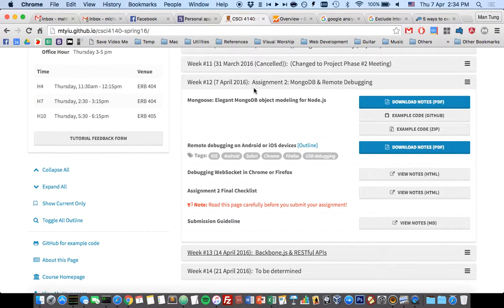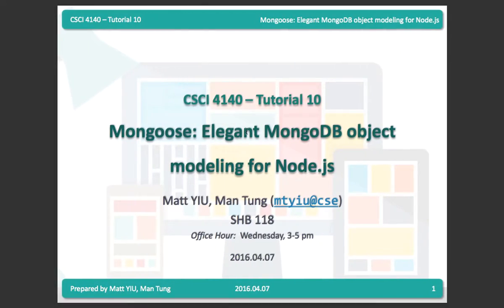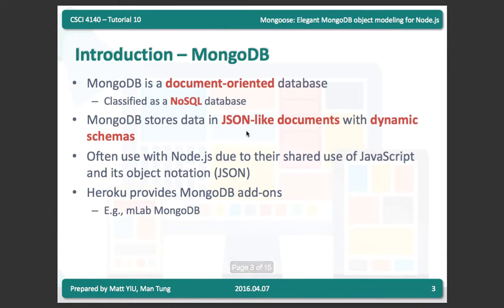Let's start today's tutorial. This is our last tutorial on the assignment tool, and I will talk about MongoDB and remote debugging, which is very useful for both your assignment tool and project development. First, an introduction to MongoDB and the corresponding Node.js library. MongoDB is a document-oriented database, meaning all records are in document format, and the documents are in JSON format.